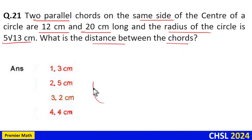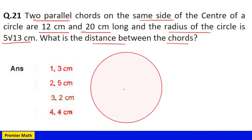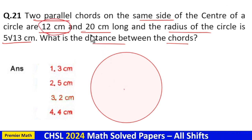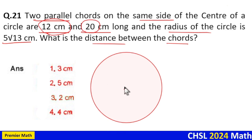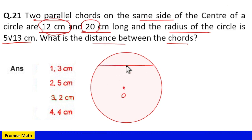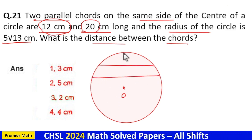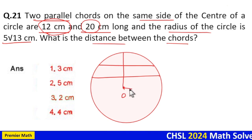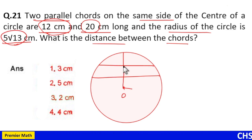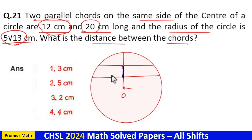Here is the circle, and the two chords of length 12 cm and 20 cm are on the same side of the center. This is the center, this chord has length 12 cm, and this chord has length 20 cm. Now we have to find the distance between these two chords — I will take it as d.